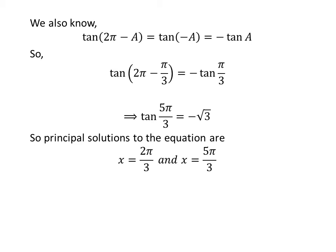So the principal solutions to the equation tangent of x is equal to minus square root of 3 are 2 times pi upon 3 and 5 times pi upon 3.